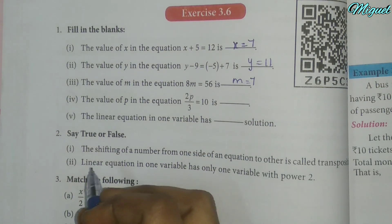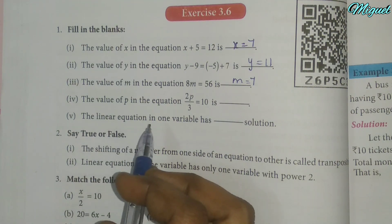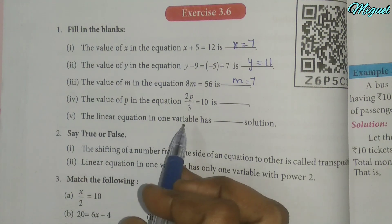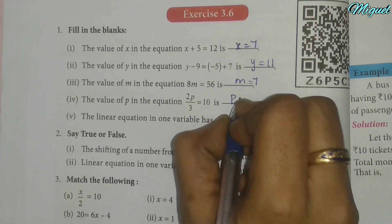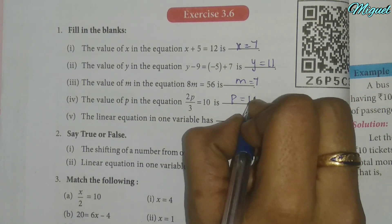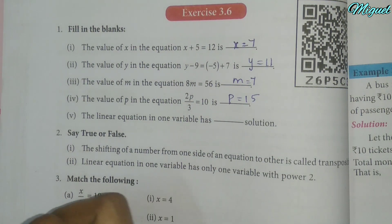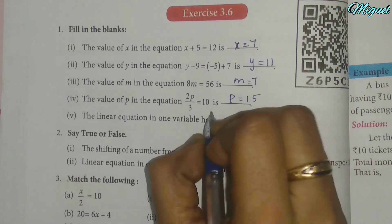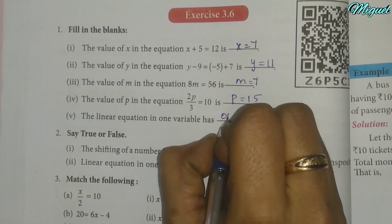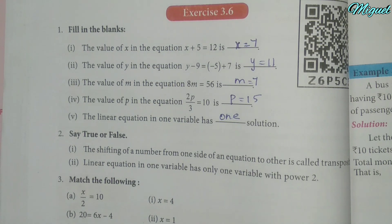The value of p in the equation 2p by 3 equals 10 is p equal to 15. A linear equation in one variable has one solution.